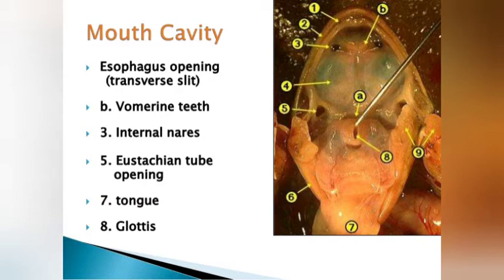The mouth cavity contains the esophagus opening, vomerine teeth, internal nares, Eustachian tube opening, tongue, and glottis. These are the parts of the mouth cavity.